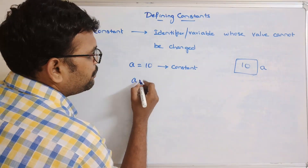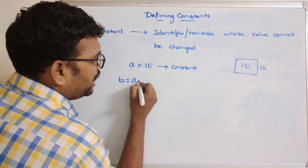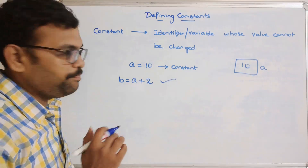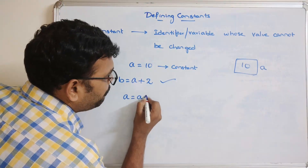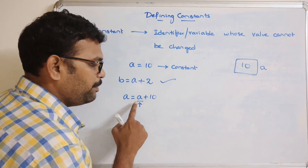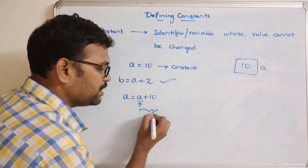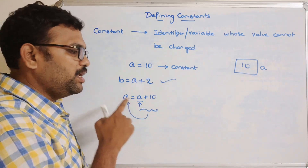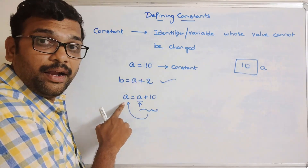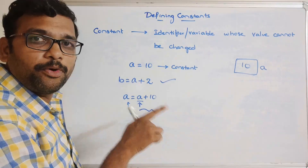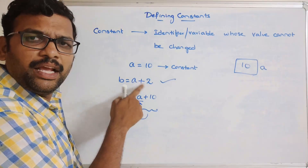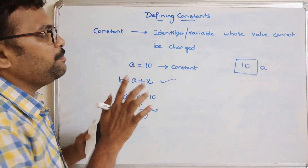We can use the constant in an expression — for example, b = a + 2 is possible, meaning we are using a constant in an expression. But a = a + 10 means we are trying to store a new result back into 'a' itself. Since 'a' is declared as a constant, we can't update its value — but we can use it in any expression.